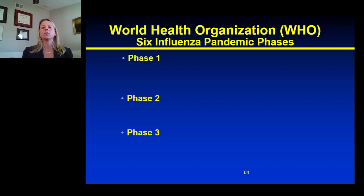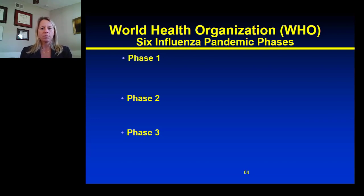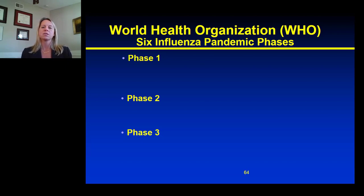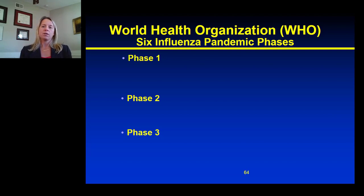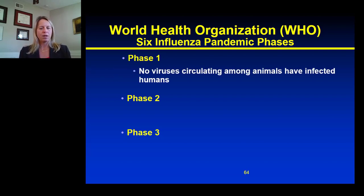Specific to flu or influenza, the WHO has specified six key phases. This is important because flu is itself a concerning problem every year, as it can ultimately lead to pandemic-level disease and, depending on the strain, can confer high morbidity and mortality as we've seen in the past. I want to walk you through this to give you a sense of how the WHO, considered the global public health leader, classifies the different phases of a pandemic.